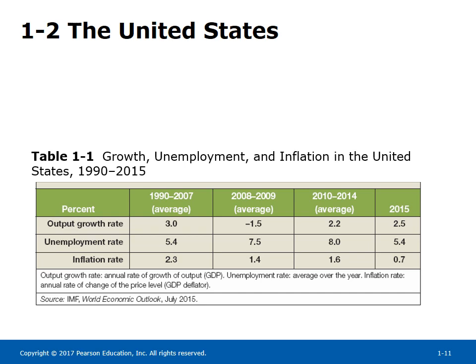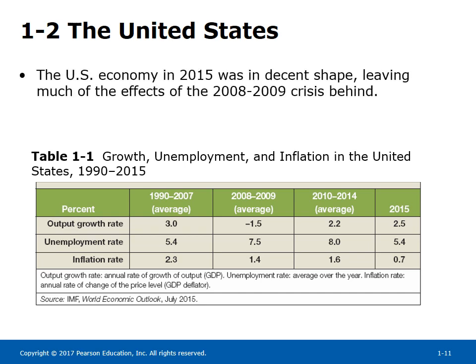During the crisis years, output growth was negative. Unemployment increased from 5.4% to 7.5%, and the inflation rate lowered from 2.3% to 1.4%. By 2015, the US economy recovered nicely, leaving the effects of the crisis behind. Output growth rate returned to 2.5%, only slightly below the 3% average for 2000–2007. Unemployment returned to the pre-crisis level of 5.4%. Inflation is low — at 0.7%, it is substantially below the 1990–2007 average of 2.3%.